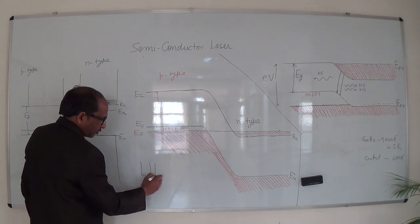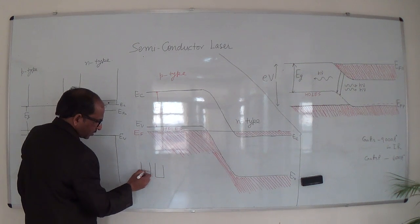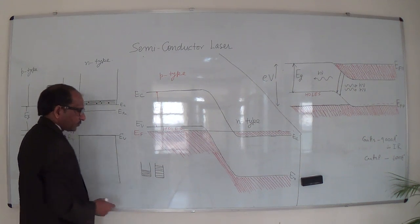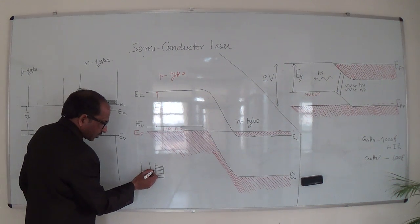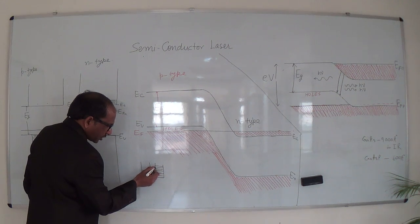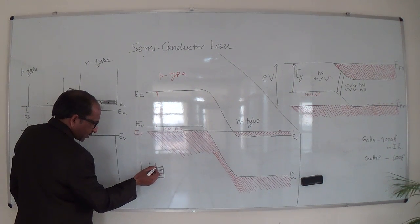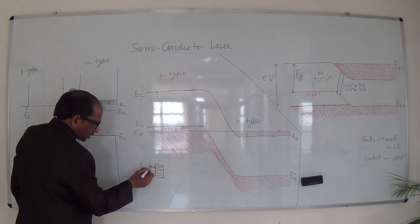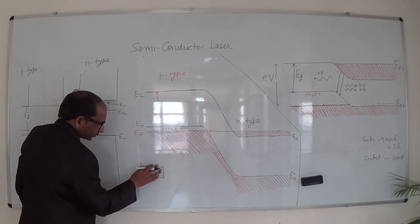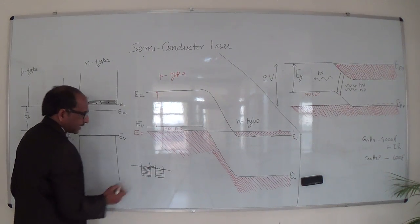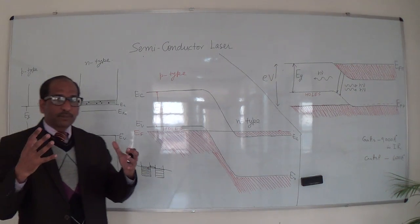The idea can be explained with an analogy: imagine two containers of water at different levels. When we join them with a pipe, water flows from the higher level to the lower one, and after some time both reach the same level. Similarly, when we join P-type and N-type semiconductors, the energy levels adjust until they become equal.